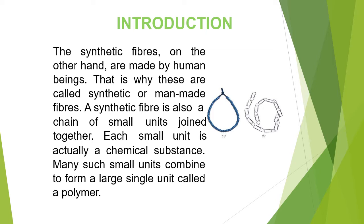Synthetic fibers are man-made fibers. These are made from synthetic materials and are made in factories. In class 6 and 7 we studied about natural fibers — from plants like jute and cotton, and from animals like silk and wool. Synthetic fibers consist of smaller units called monomers, which join together to form larger units called polymers.